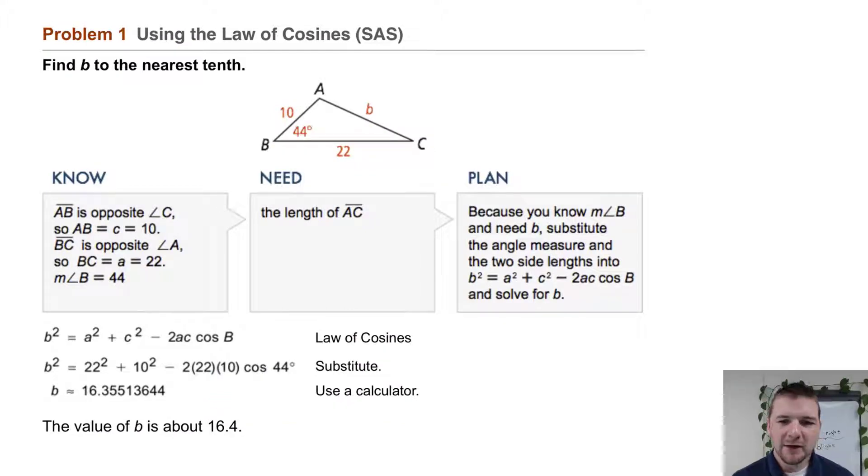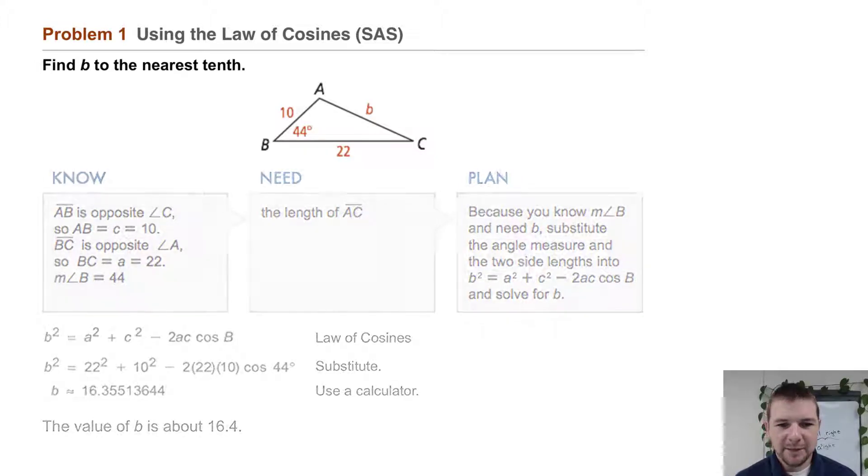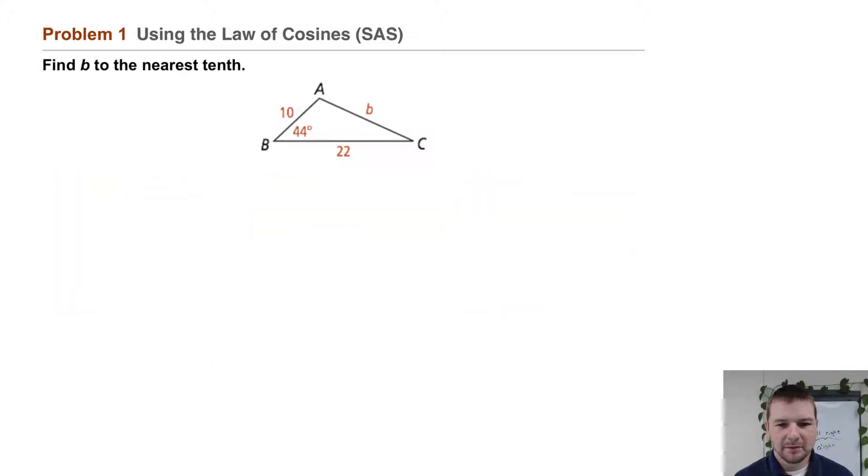Problem one. Using the law of cosines in a side angle side situation, find b to the nearest tenth. Consider the diagram. We have some information labeled. Two side lengths and our unknown side length b. We do know the opposite angle measure. The measure of angle B is 44 degrees.